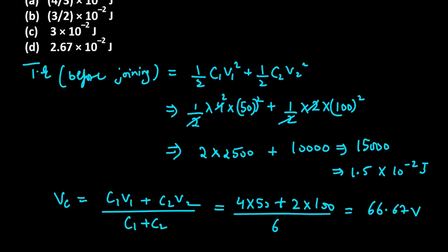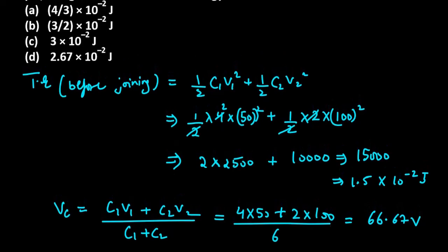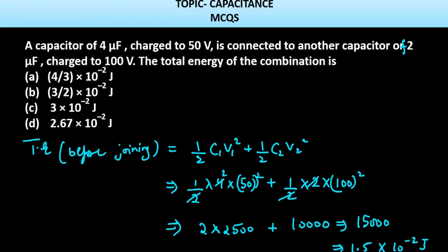Now we have to see that we have V_c. Now we have to start total energy after joining. This will be, total energy will be equal to half C1 plus C2, and in this case, our V1 and V2 will not be different. That will be common potential, V_c square, so we can take it out.